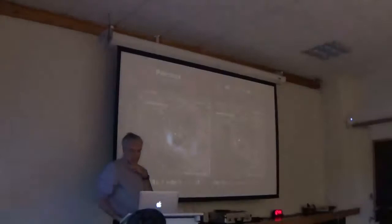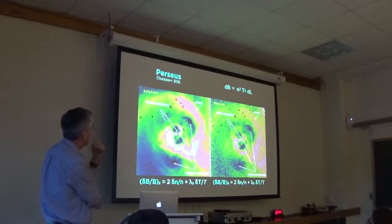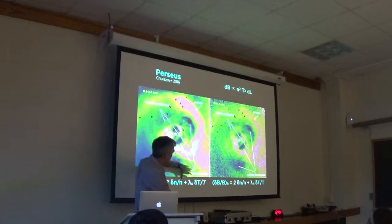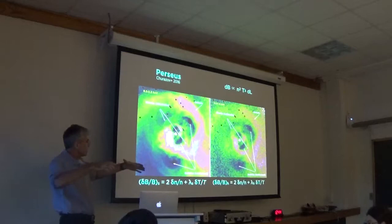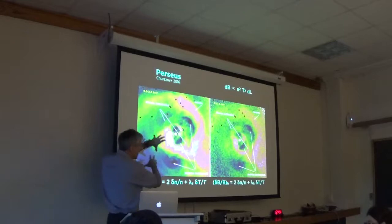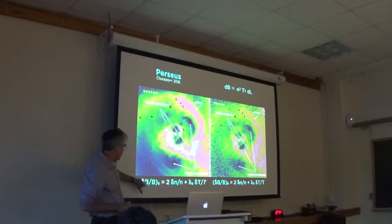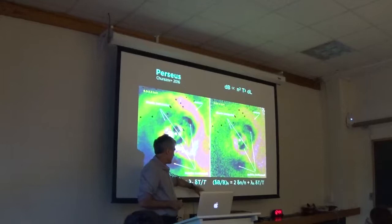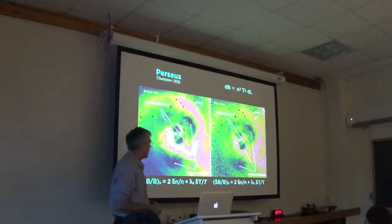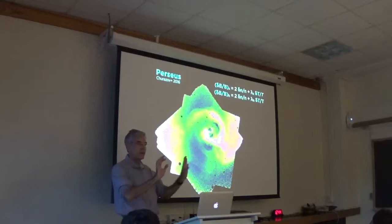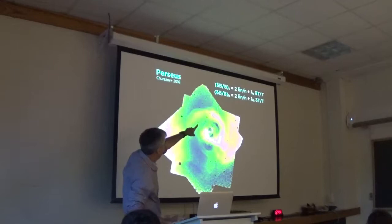So what kind of waves are there? One great visualization of them was done by Eugene Churazov last year. And this is the center of the Perseus cluster. This is a soft band map and this is a hard band map. The smooth radial structure has been subtracted, so you see the azimuthal stuff. And you can see structures that look somewhat different in the soft band and the hard band.